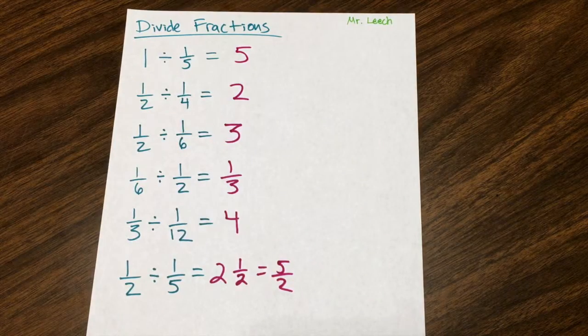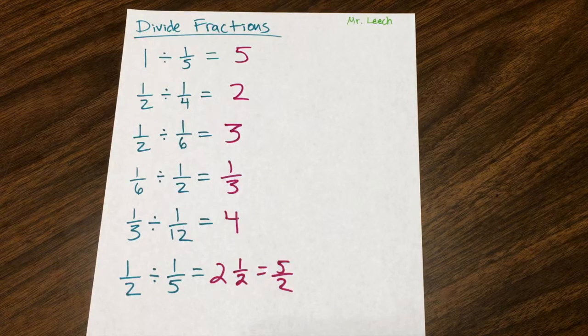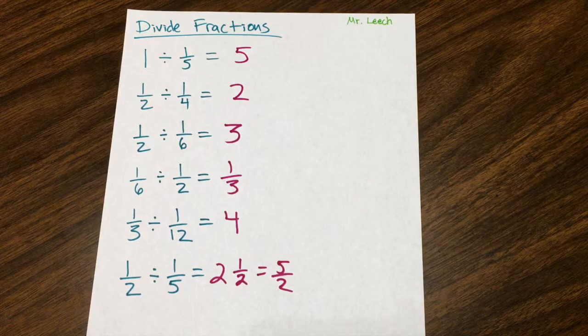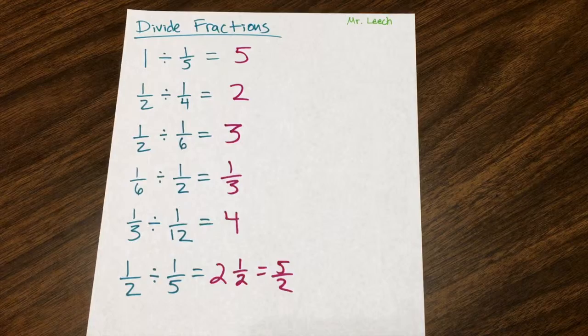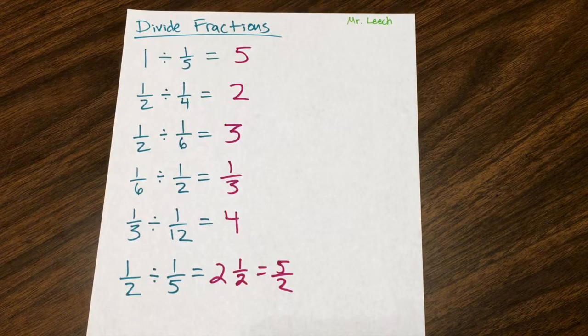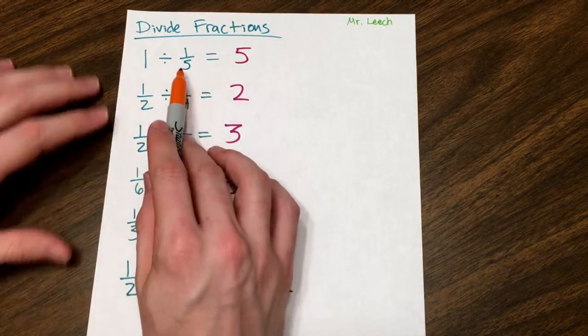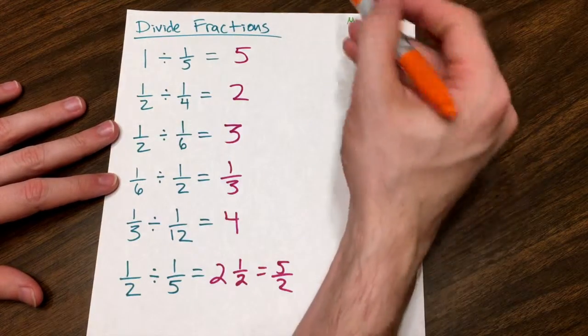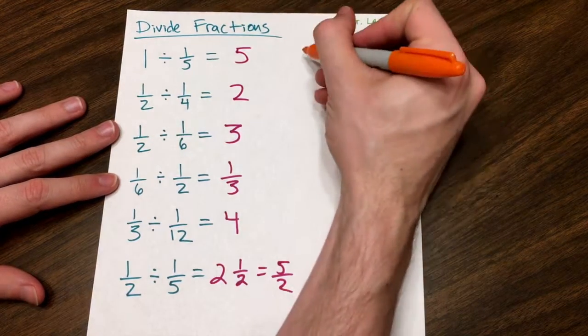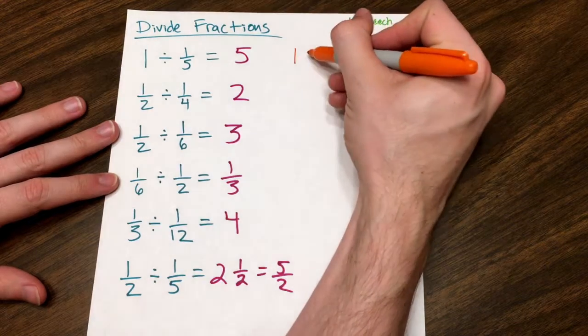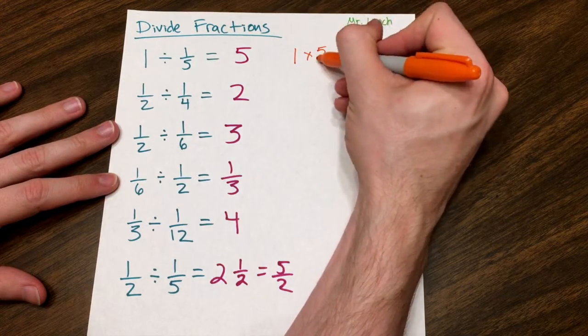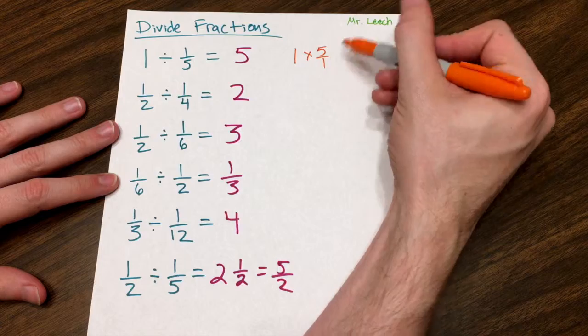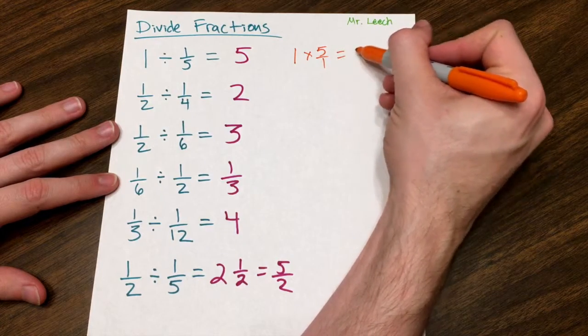Lastly, I want to relate what we've seen with the fraction strips back to our rules of division. Remember, any time you divide anything, I can turn that division into multiplication. I just have to reciprocate or flip over the second fraction. So this is the same thing as saying one times five over one. Five over one is just five, so that's how we end up with just five.